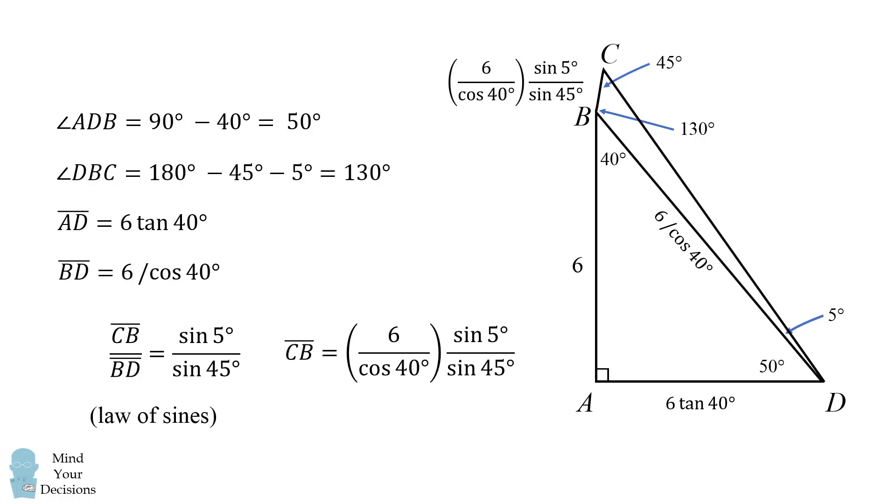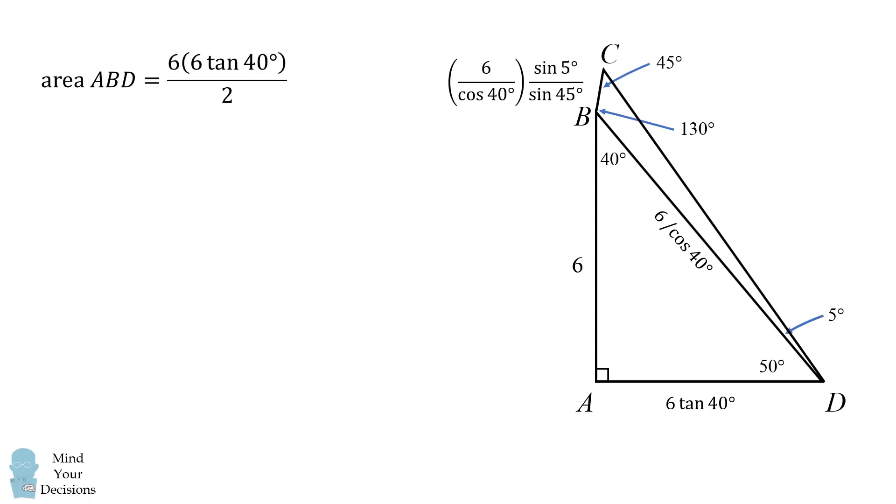Now that we've calculated some of these values we can calculate the areas we want. Now triangle ABD is a right triangle so we can calculate its area as 6 times 6 times the tangent of 40 degrees all over 2.